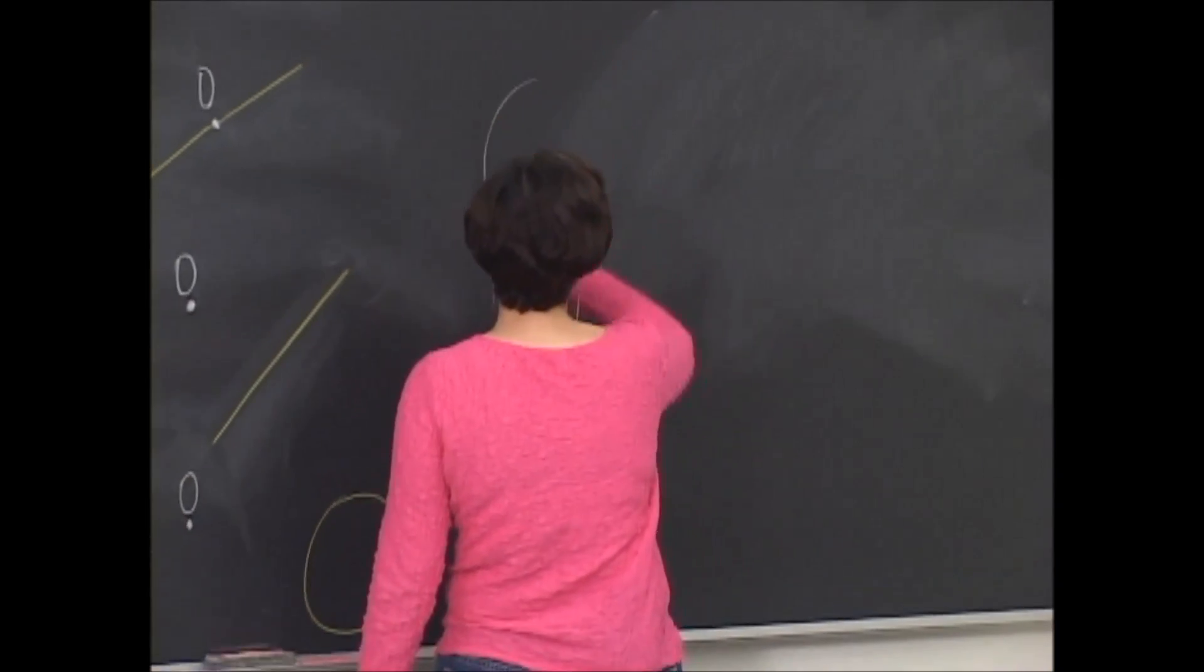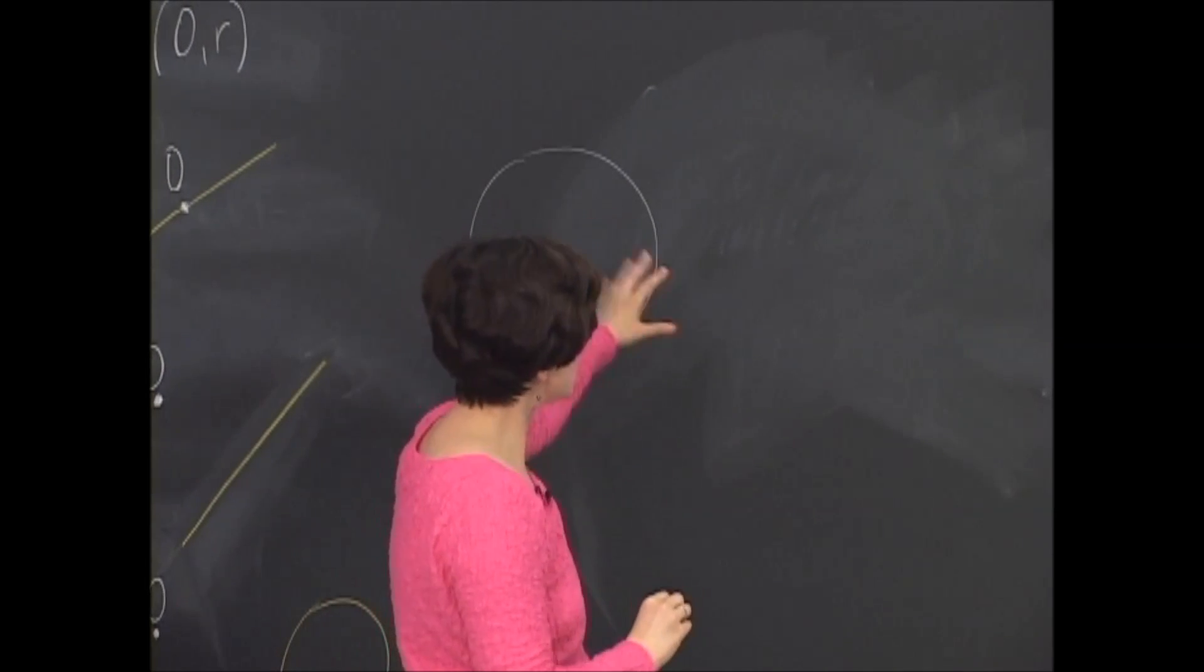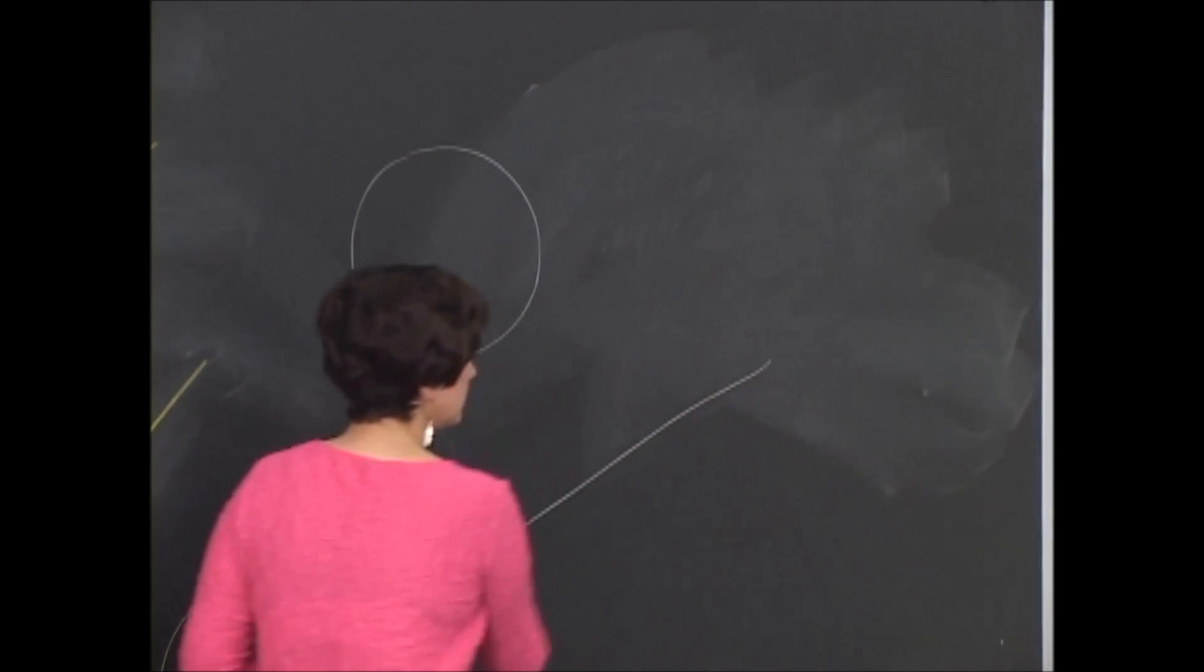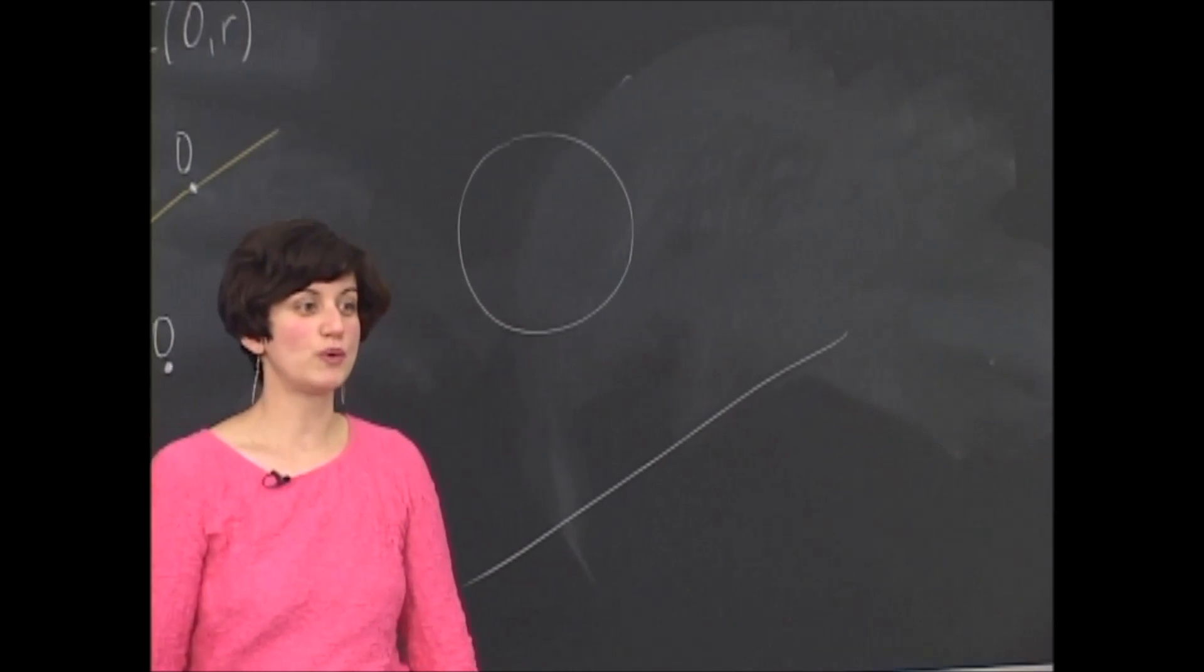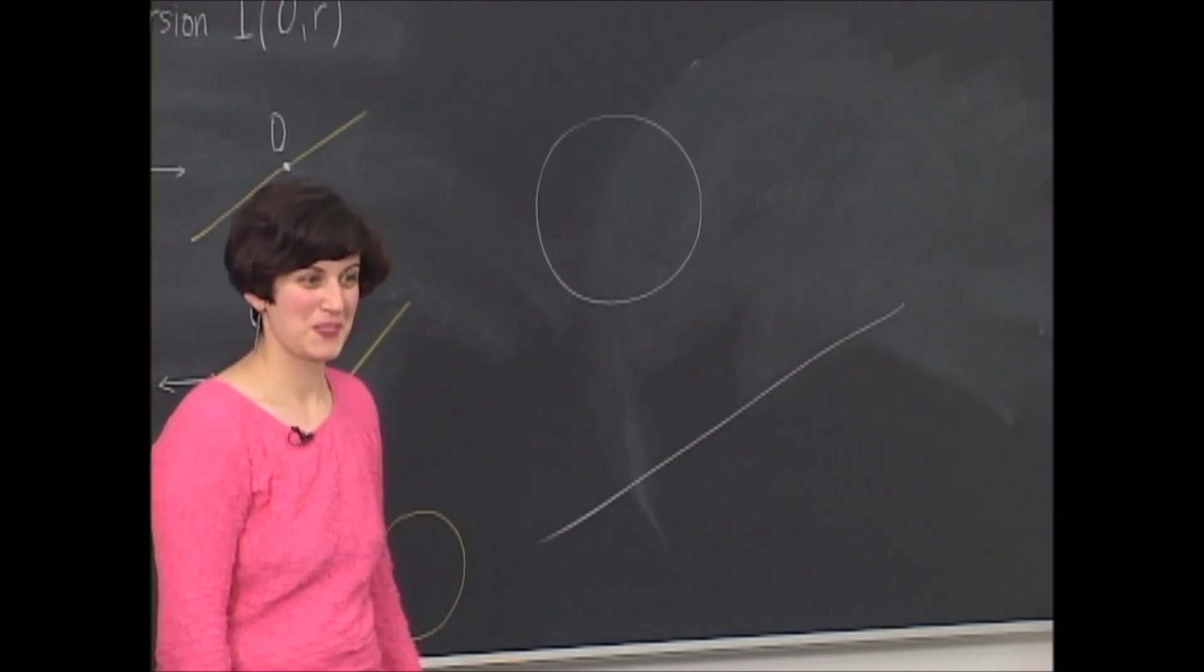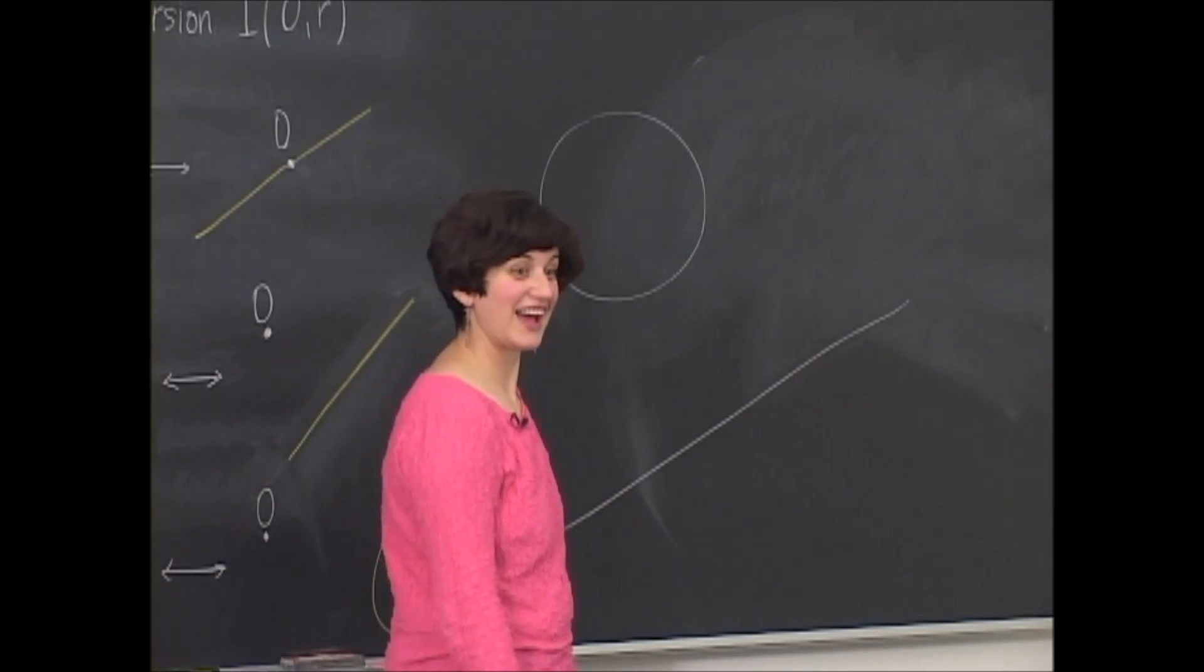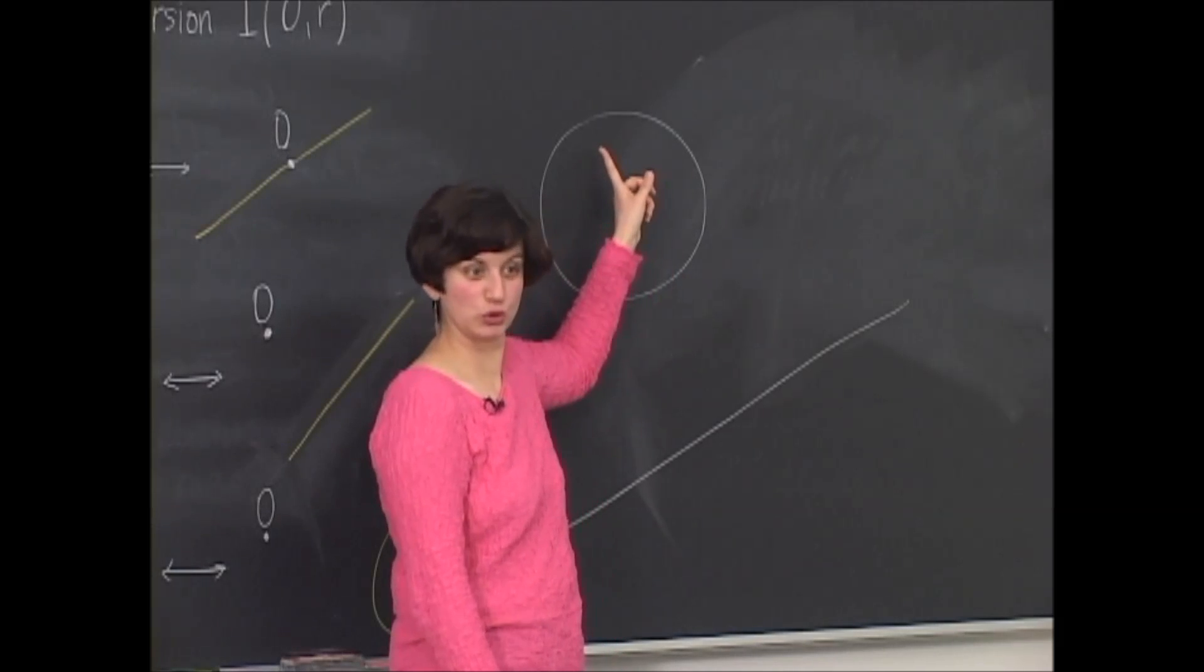So since this is on the handout of inversion, we should probably use inversion, right? From last time, we had a circle given in our Ptolemy's Theorem, and we wanted to reduce the circle to a line. So where did we place the center of inversion?